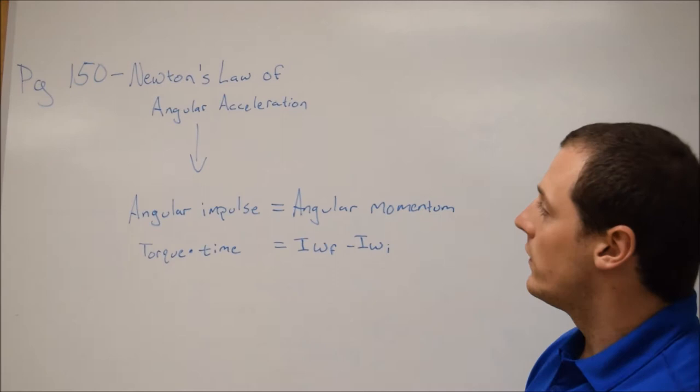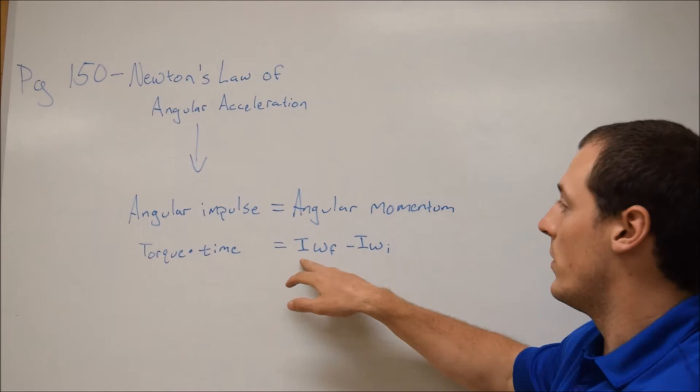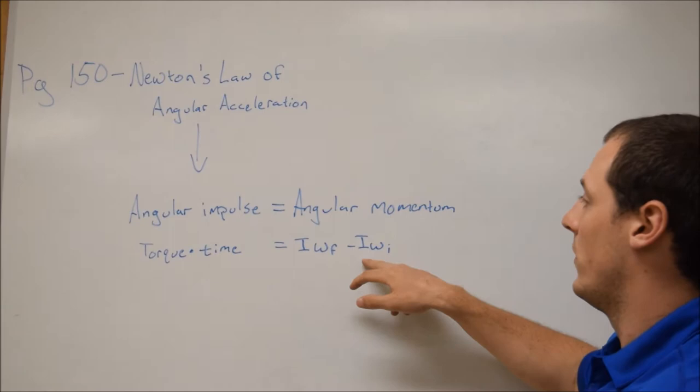So first thing I want to go over is just touch on Newton's law of angular acceleration, which is on page 150 in the book. It gives a good example of what all this stuff means and how to apply it. Basically what it's saying is that the angular impulse is equal to the angular momentum, which is another way to say that torque times time is equal to the moment of inertia times the final angular velocity minus the moment of inertia times the initial angular velocity.